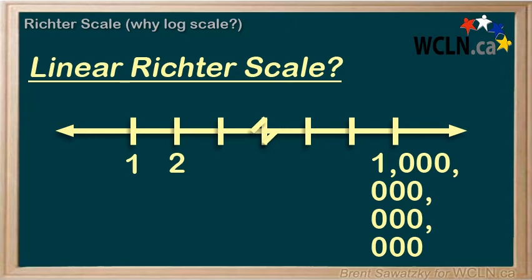How many ticks should we have on our scale? How do we even describe the average earthquake? We just had an earthquake that measured 670 billion on our scale — quite a bit larger than that big one that measured 480 million on our scale last year.